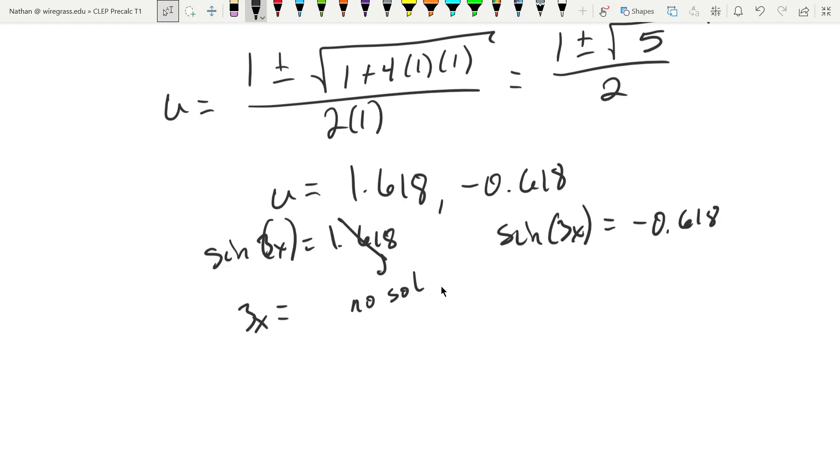So that gives me 3x equals negative 0.666196, and then dividing by 3.